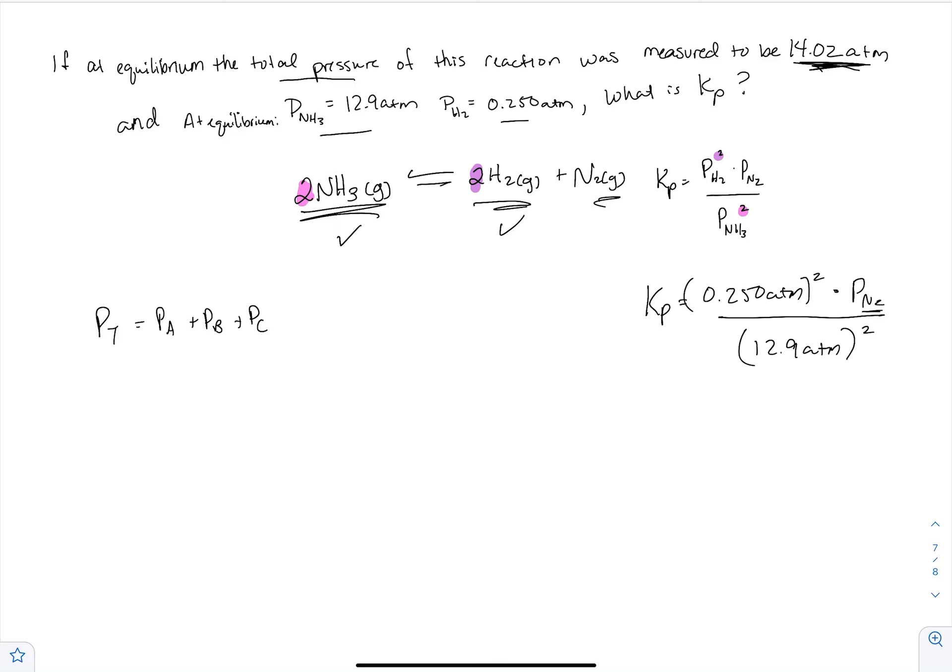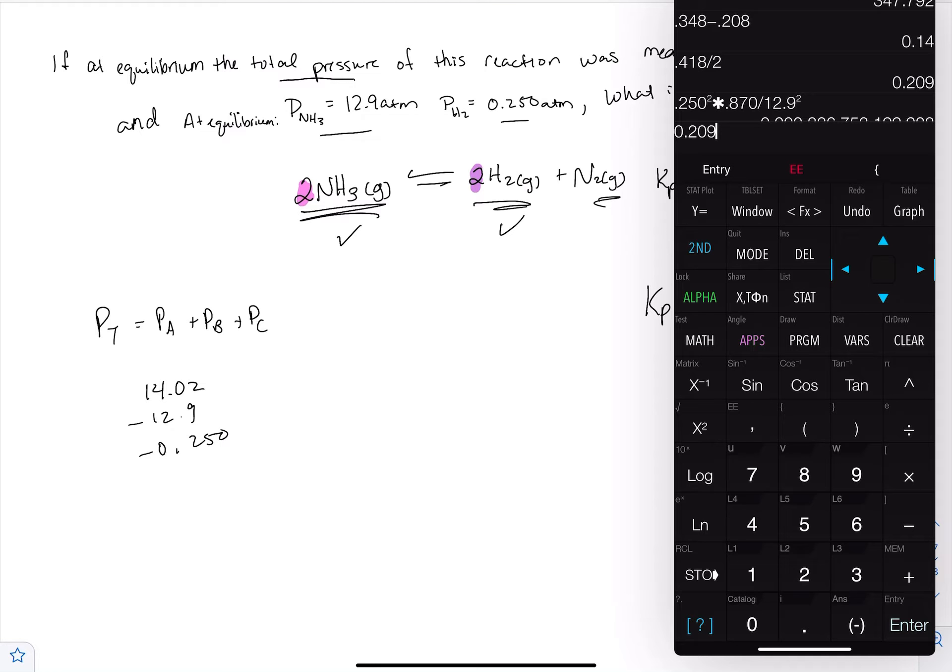So we just go ahead and say 14.02 minus 12.9 minus 0.250. Let's do a quick check and see what it is.